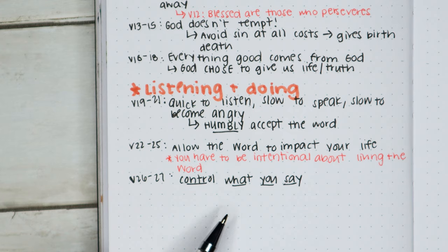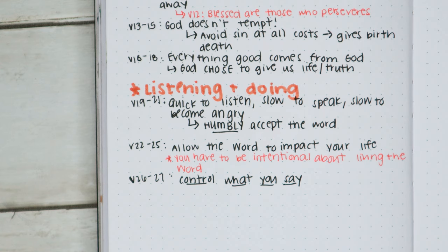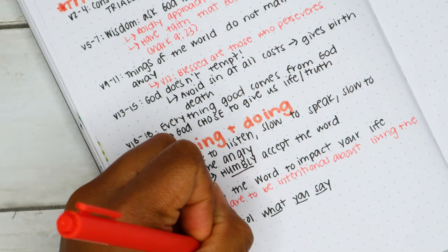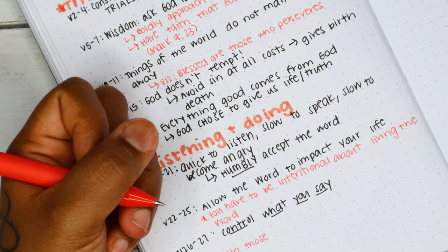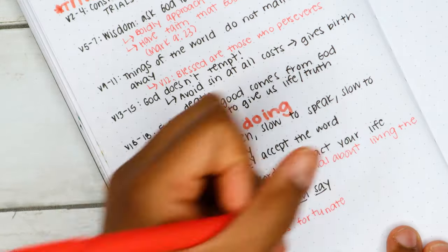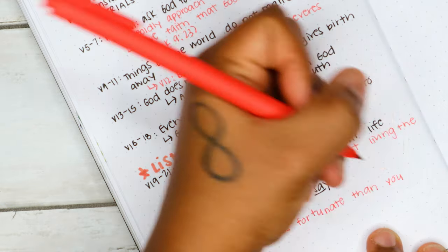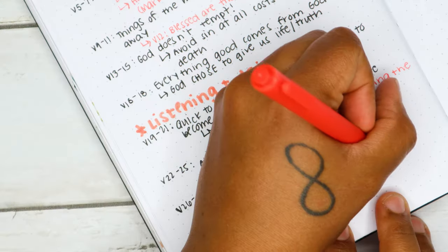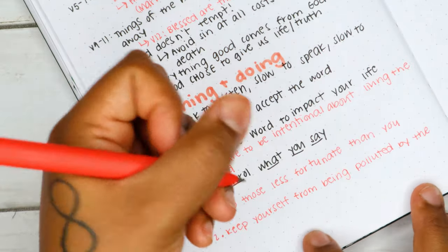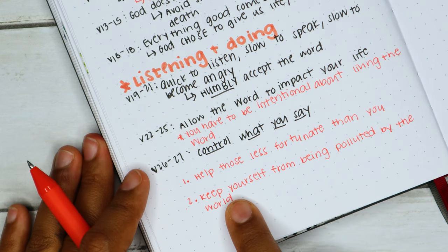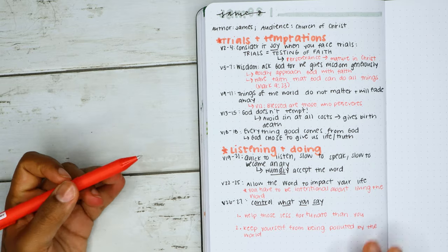Religion that God our Father accepts as pure and faultless is this: to look after orphans and widows in their distress, and to keep oneself from being polluted by the world. Two important factors here — first, look after those less fortunate, not necessarily financially but even emotionally. Some people are going through hard times; just be a good friend. Second, keep yourself from being polluted by the world. I did a video on how to live in the world but not of it — go check that out if you're wondering how to apply that second point.